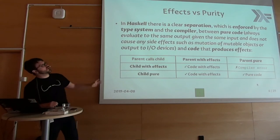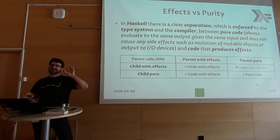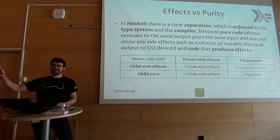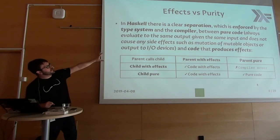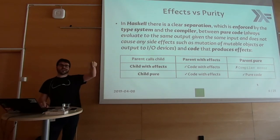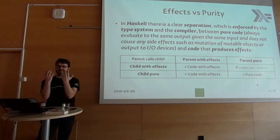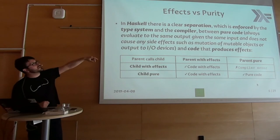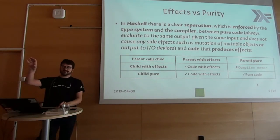One of the key things about Haskell is this concept of code that produces side effects and code that doesn't. The good thing about people working with type-safe languages: you cannot aggregate a string to an integer because your compiler — your type system — will say those two things don't match. This is what Haskell does with code that has effects and code that doesn't have effects.